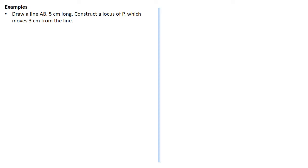We're told: draw a line AB five centimeters long, and construct the locus of P which moves three centimeters from the line. To attempt this question you should be able to draw parallel lines. The locus of point P is just a line that is parallel to AB — it could be above or below it.